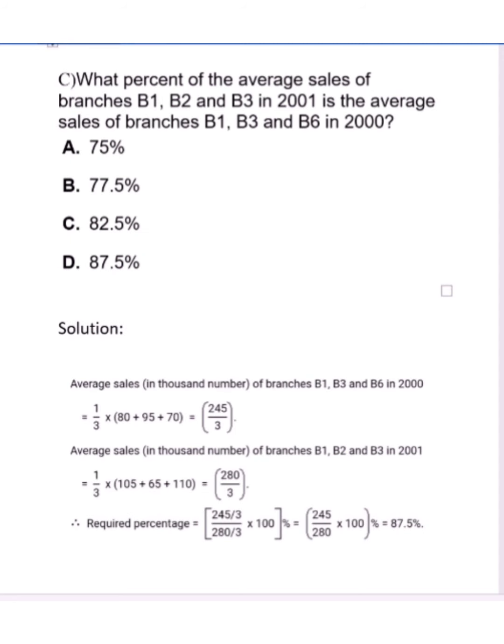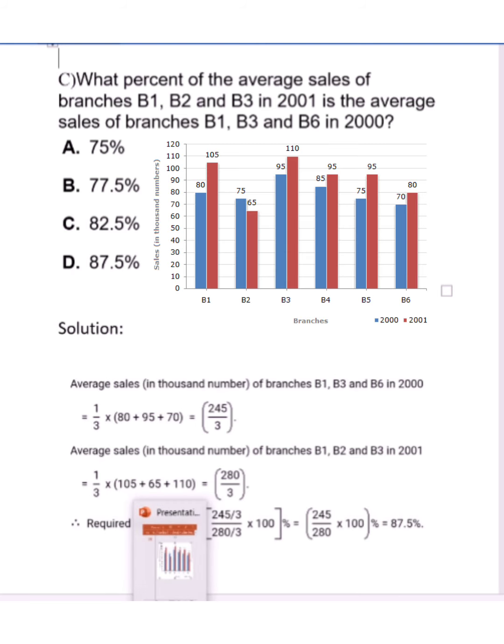For this, we have to take the data. What percent of the average sales of branches B1, B2, and B3 in 2001 is the average sales of B1, B3, and B6 in 2000? 2001 is mentioned as the red graph and 2000 is blue. For the 2000 part, B1, B3, and B6: B1 is 80, B3 is 95, and B6 is 70. Now we take the average, so we multiply with one by three and get 245 by 3.